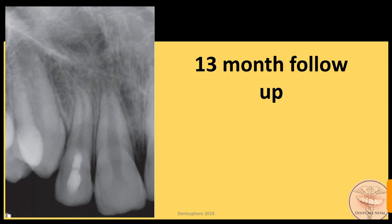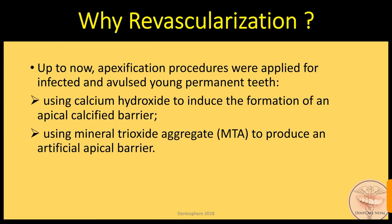This 13-month follow-up of the same case indicates complete root formation with an increase in length and thickness of the root. Radicular dentin is also well deposited. Cases treated with revascularization need to be followed up at three months, six months, and annually thereafter for four years. The absence of signs and symptoms of pathosis, as well as radiographic evidence of bone healing within two years of treatment, should be expected.